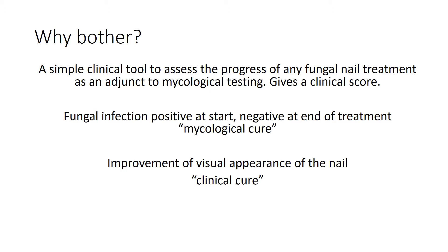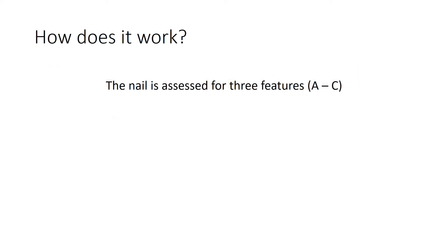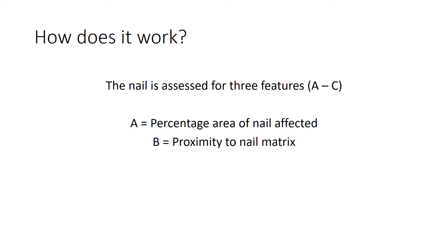So how does the OSI work? It's very simple. The nail is assessed for three features, imaginatively titled A to C. For each parameter there is an individual score: Feature A is the percentage area of the nail affected, Feature B is the proximity to the nail matrix, and Feature C is additional features. By combining these three scores you plug them into a simple equation which gives you the OSI score for that nail at that visit.